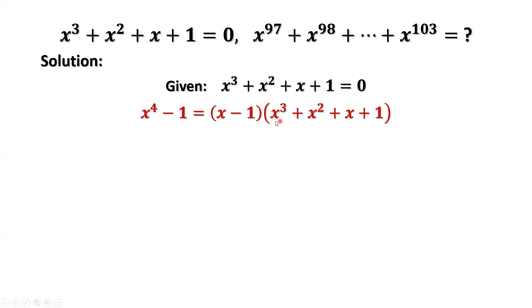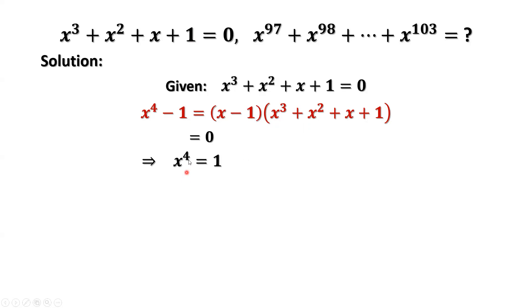What is the second part from the given condition, which is 0? Zero times x minus 1 is 0. Then we have this result: x to the power of 4 equals 1.